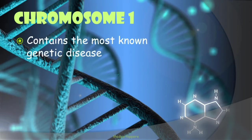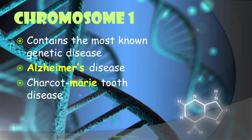Chromosome 1 contains the most known genetic diseases, approximately around 850 in number. The key diseases associated with it are Alzheimer's disease, Charcot-Marie-Tooth disease, and Homocysteinuria.